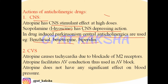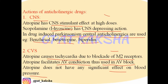On the cardiovascular system, atropine causes tachycardia due to blockade of M2 receptors, since the cholinergic system normally decreases heart rate. Atropine also facilitates AV conduction and thus can be used in AV block, where conduction through the AV node is impaired, leading to certain arrhythmias. Atropine does not have any significant effect on blood pressure.